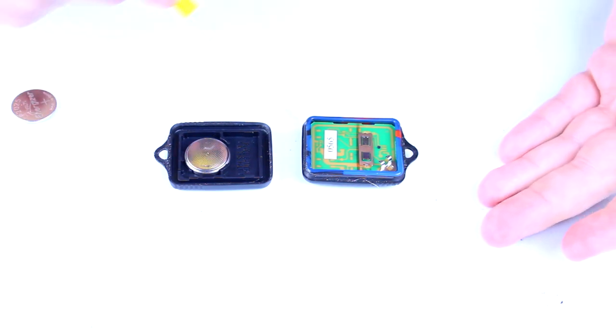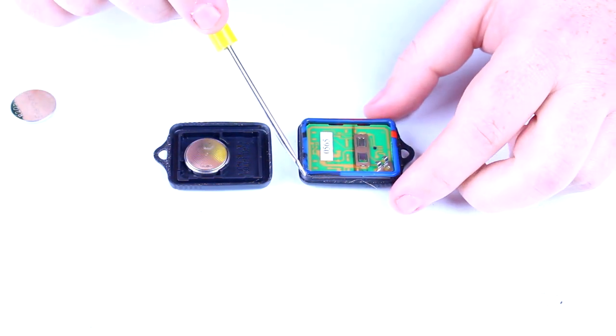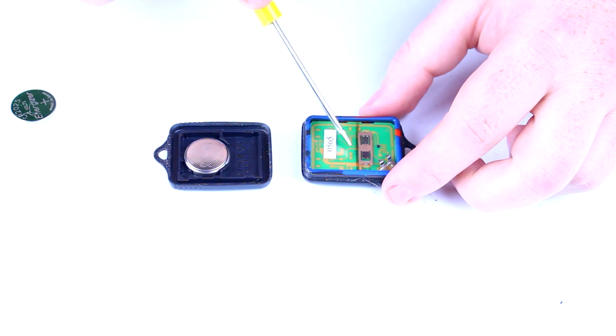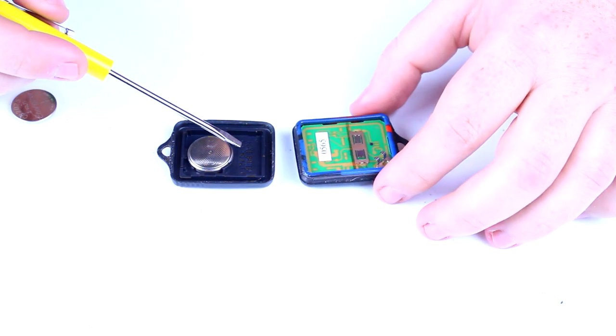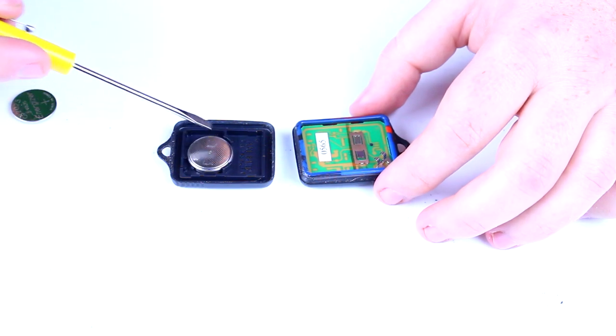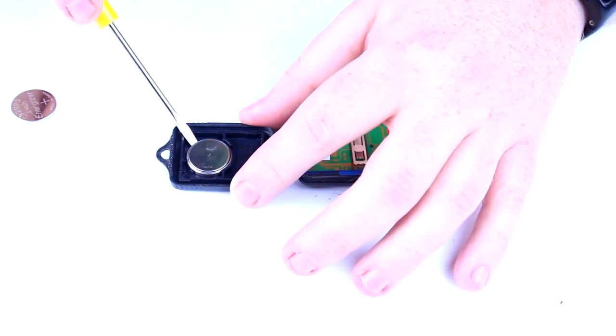So in this part you've got the front side with the buttons, the button gasket, and the chip which has the contacts for the battery. On the back side all you've got is the back plastic and the battery is retained in that plastic. Let's pop this battery out.